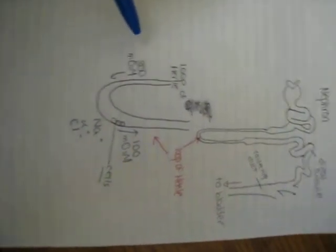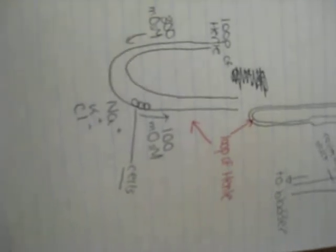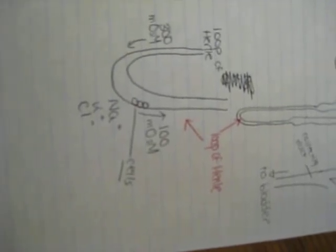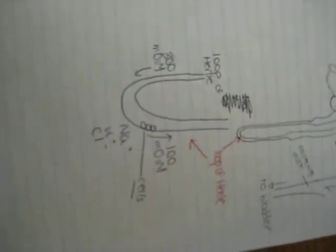Filtrate entering the loop of Henle — here, this is the loop of Henle zoomed in — has a higher osmolarity, around 300. The filtrate leaving it, however, is hypoosmotic with an osmolarity of around 100, a third of what it was before. This change happens when cells in the thick part of the loop transport sodium, chloride, and potassium ions out of the tubule lumen. These cells are unusual because, unlike most cells, they have an apical surface which is not permeable to water. So when these cells move the solute out of the lumen, the water cannot follow, which creates a hypoosmotic solution.